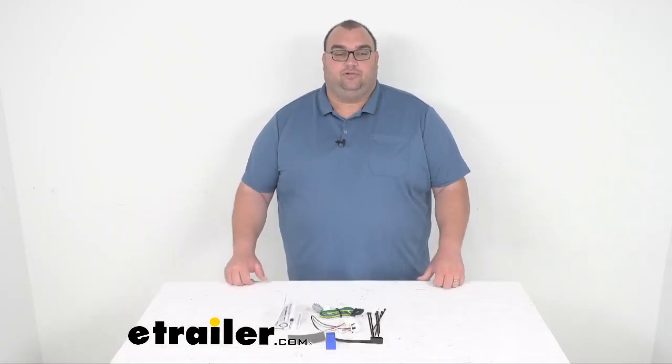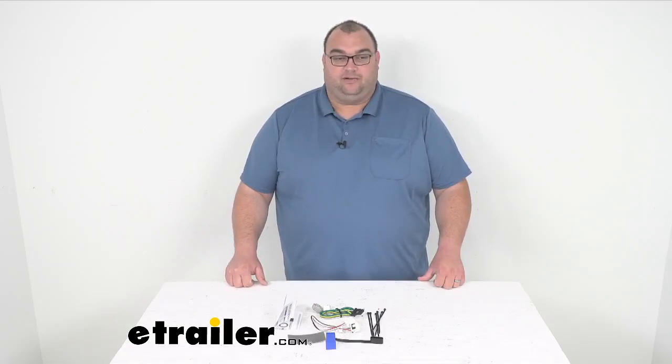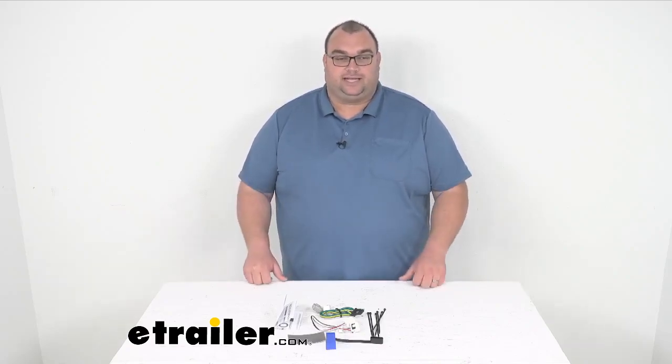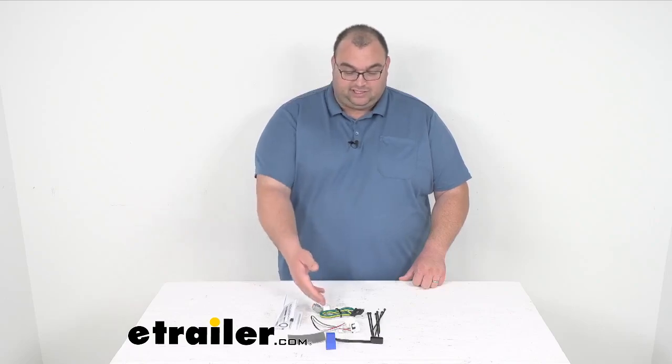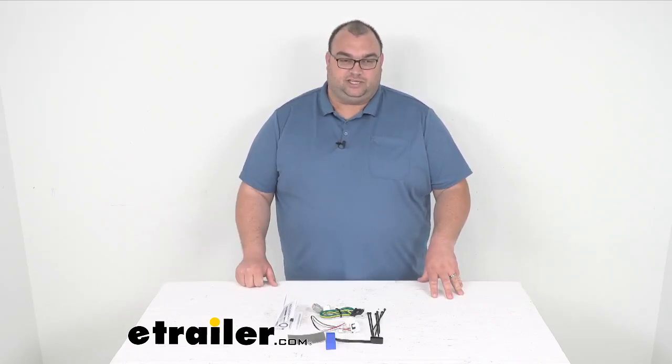So again, it's going to plug into your vehicle's wiring harness. You'll basically remove the cargo storage tray located in the rear cargo area of your vehicle. There'll be a back trim flap that you'll pop out to access the connection point, and these simply just plug in place. It's very simple.